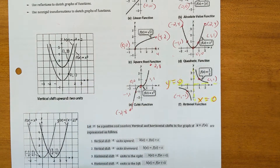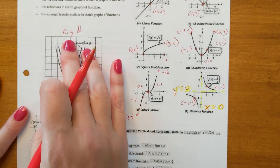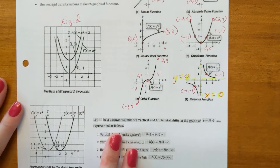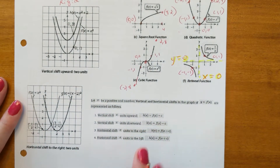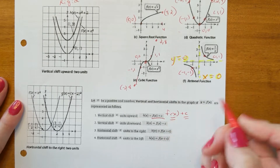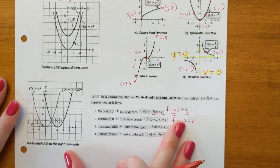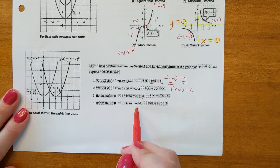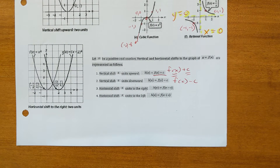We're working first on rigid transformations. Rigid transformations mean the shape doesn't change at all — you slide it up and down or left and right, but the shape stays the same. If you add a constant outside the f(x) function, like f(x) + c, that shifts it up if plus and down if minus. For horizontal shifts, it does the opposite of what you'd think: it goes right if minus and left if plus, because the function is solved for y, so when x moves to the right-hand side the sign changes.